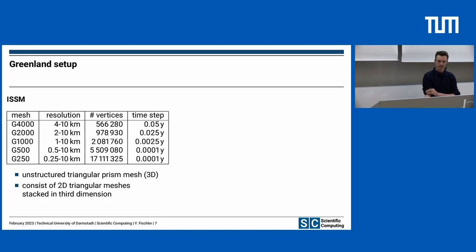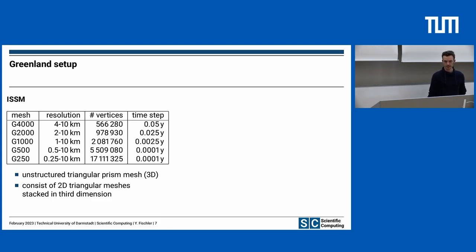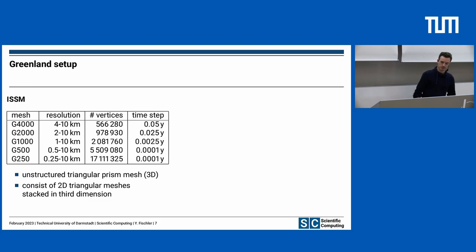To give an idea about the meshes we are talking about: the ISSM mesh for Greenland is very heterogeneous, with a resolution ranging from 250 meters to 10 kilometers. So the smallest edge is 250 meters and the largest is 10 kilometers, which is interesting for the mapping within preCICE. We have approximately 17 million vertices distributed across 15 layers, giving approximately one million elements per layer. As we currently couple only one layer, we have a maximum of approximately one million vertices to couple.